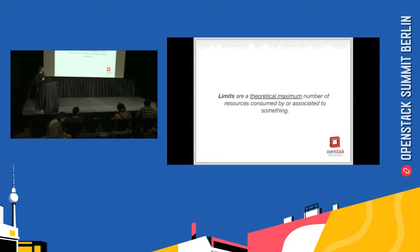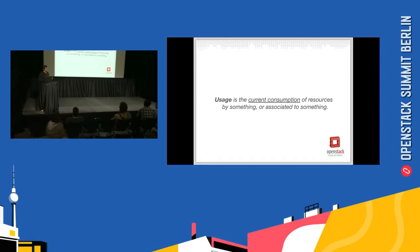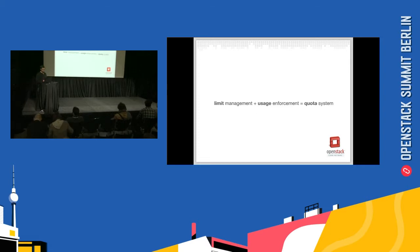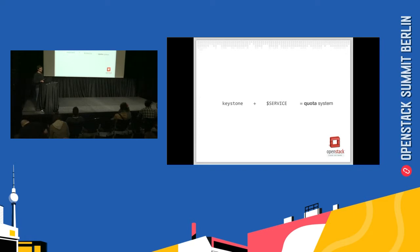So what are unified limits? If we take a very unofficial definition of the term limit, it's essentially a theoretical maximum of the number of resources that you can consume. That's a very important distinction to make from another definition we need to define, which is usage — the current number of things that you're currently using. When we started the unified limits work a couple of years ago, we wanted to make a very distinct distinction between those two terms because they can be managed by two separate systems or entities. Ultimately, what we're trying to do is combine limit management with usage enforcement, and then you have the basis for a quota system that lets you regulate consumable resources to your users. For OpenStack, that means replacing limit management with Keystone and keeping usage enforcement and calculation at the service.